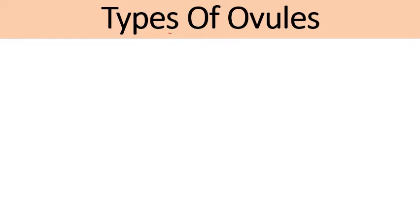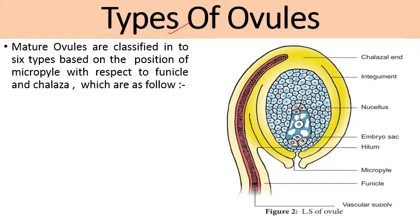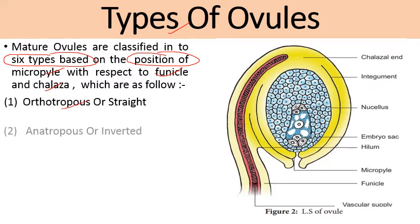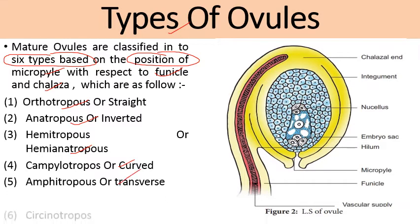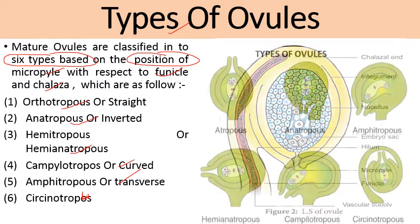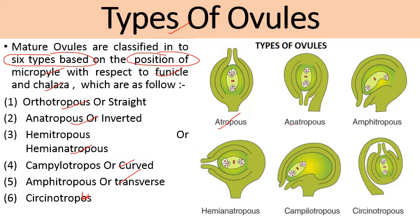Now let's look at the types of ovules. On the basis of the position of the micropyle with respect to the funicle and chalaza, ovules are of six types: orthotropous (straight), anatropous (inverted), hemitropous or hemianatropous, campylotropous (curved), amphitropous (transverse), and circinotropous.